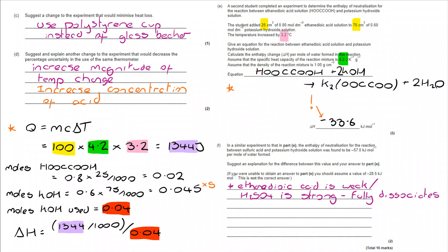Strong acids fully dissociate in solution. Weak acids do not fully dissociate in solution. But they will need to dissociate to react. So energy would be required to break those extra bonds in the weak acid. That's an endothermic process. That therefore explains the difference.